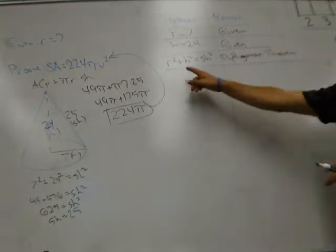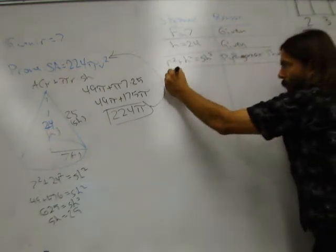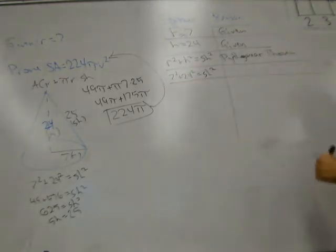Okay, do we know what the radius is? Yes. Do we know what the height is? Yes. So we replace those. Now we say 7 squared plus 24 squared equals slant height squared. What's that called? Substitution.